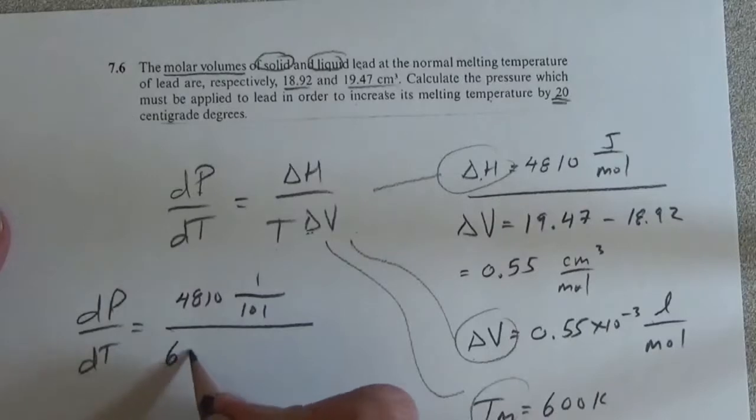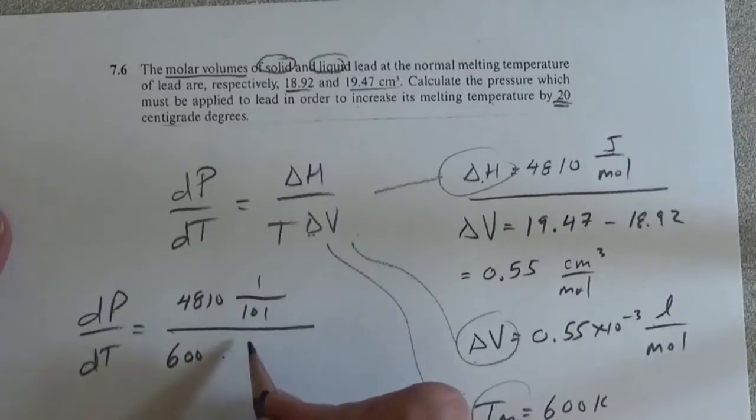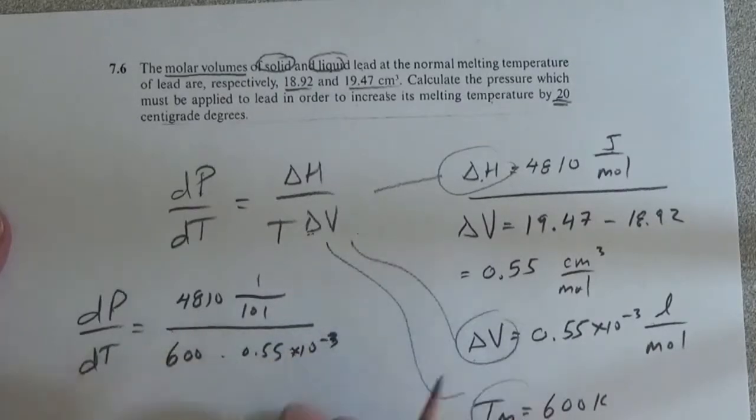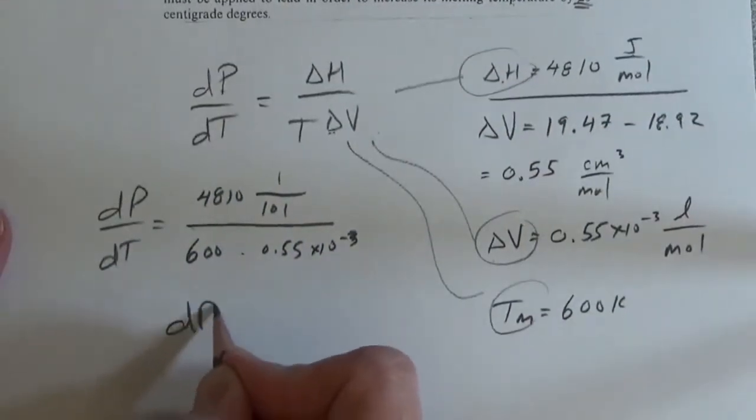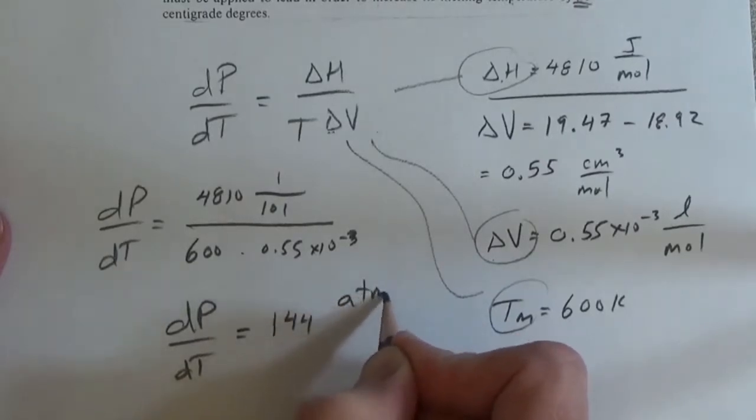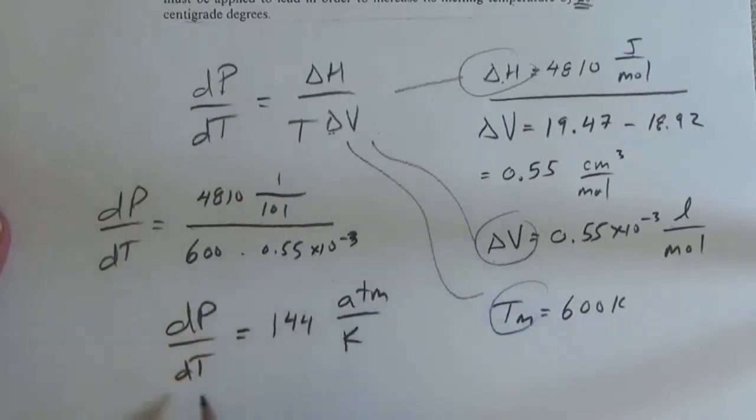Divided by 600 times 0.55 times 10 to the minus 3, or dp by dT is equal to 144 atmospheres per K.